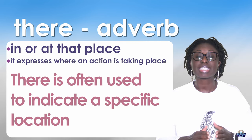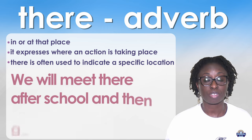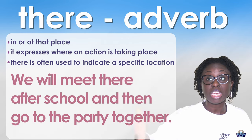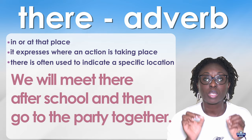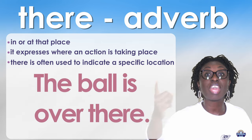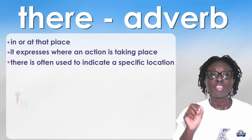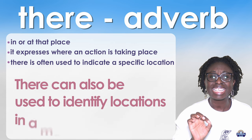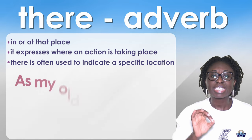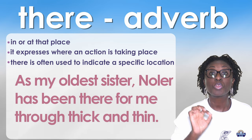Let's look at some examples. We will meet there after school and then go to the party together. So there in this sentence is a location — it could be under a tree, it could be at the school, but it's a location. The ball is over there — another location. There can also be used to identify locations in a more abstract sense.